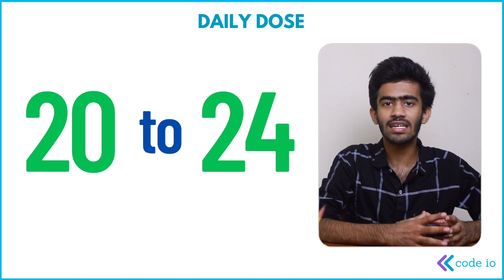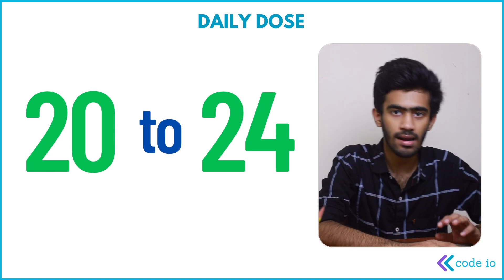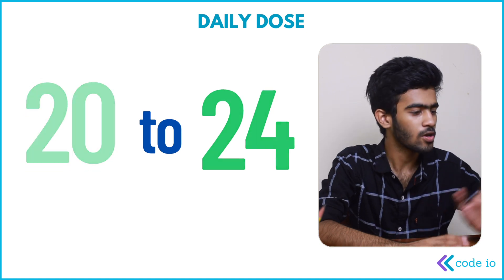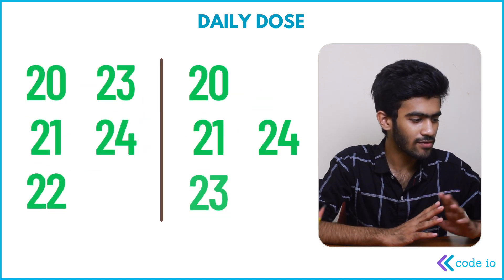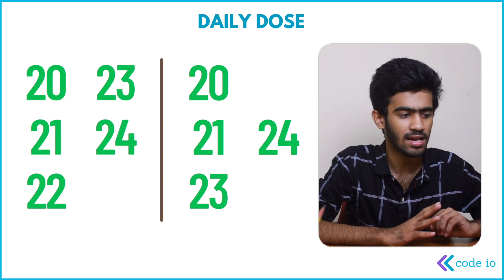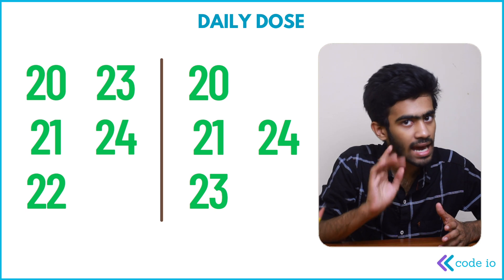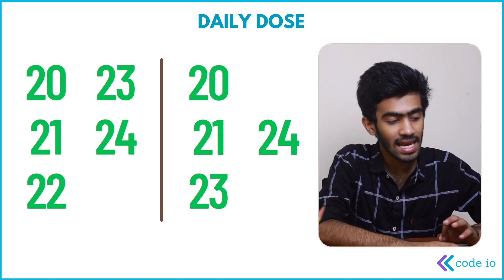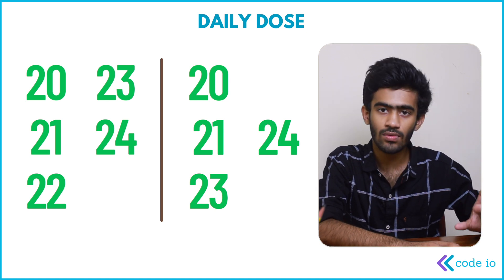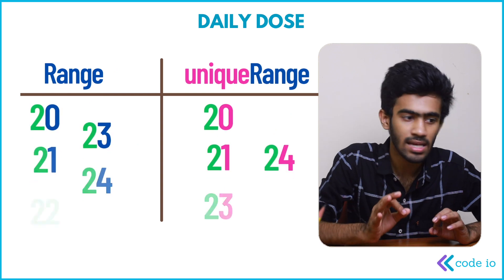So here we have 20, 21, 22 — all numbers are listed here. All numbers are unique, that's how we print the numbers. The numbers from 20 to 24 are: 20, 21, 22, 23, 24. If you look at 22, it has the same character repeated. And all other numbers are unique. So in this range, 20 and 24 — the right size is unique.